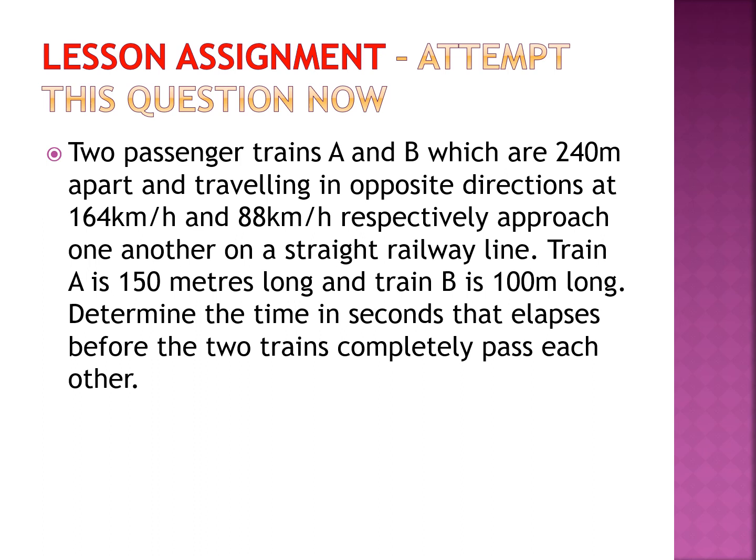As an in-class assignment, do this question: two passenger trains A and B are 240 metres apart and traveling in opposite directions — one at 164 km/h and the other at 88 km/h on a straight railway line. Train A is 150 metres long and train B is 100 metres long. Find the time in seconds that elapses before the two trains completely pass each other. Take your time — it's a good question.